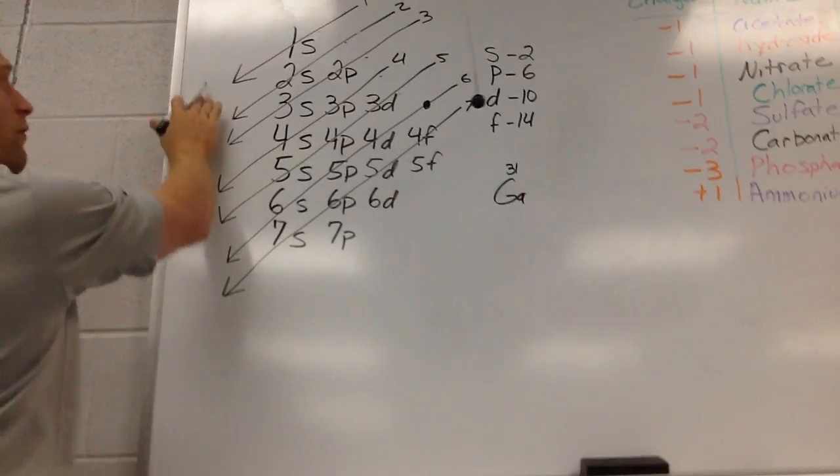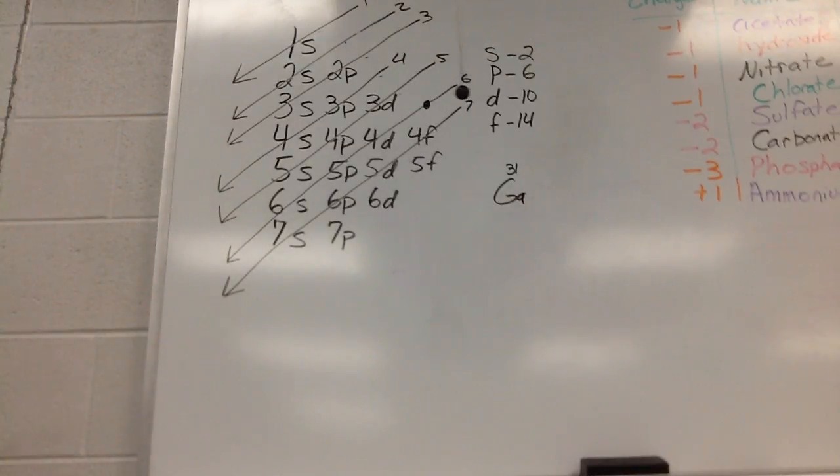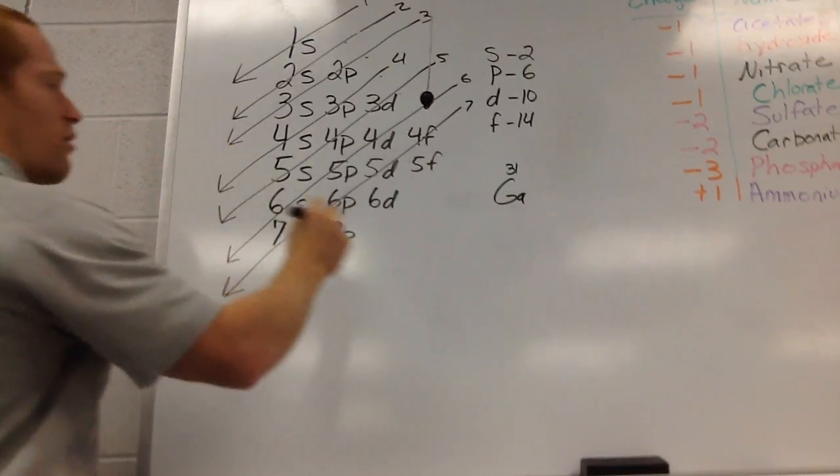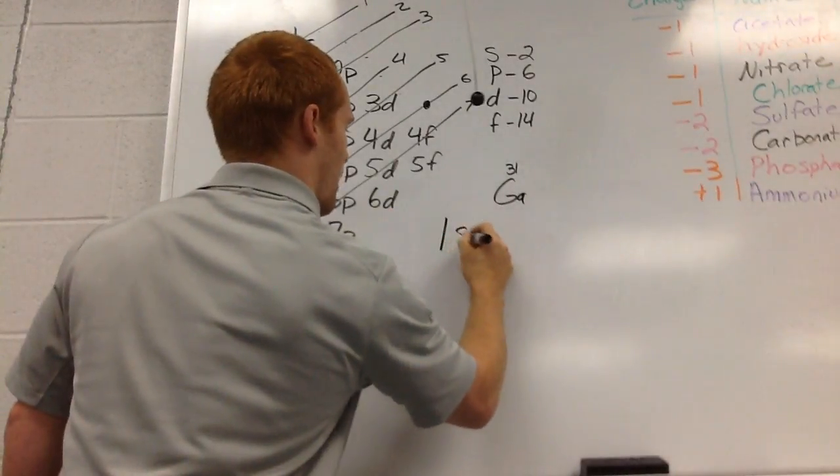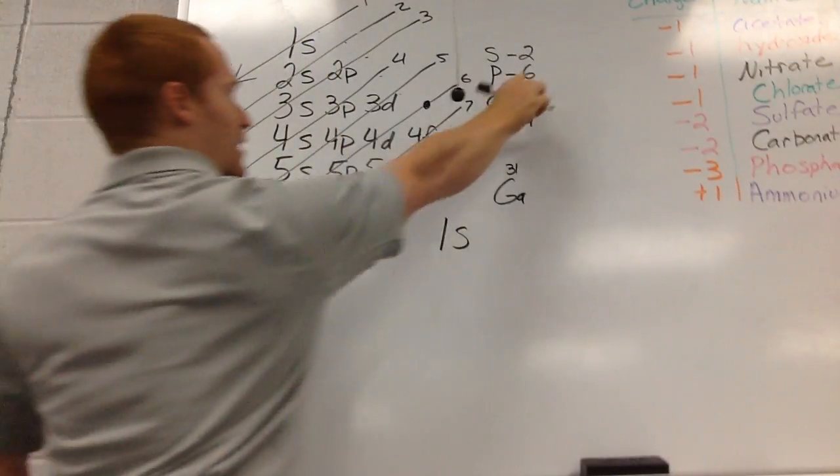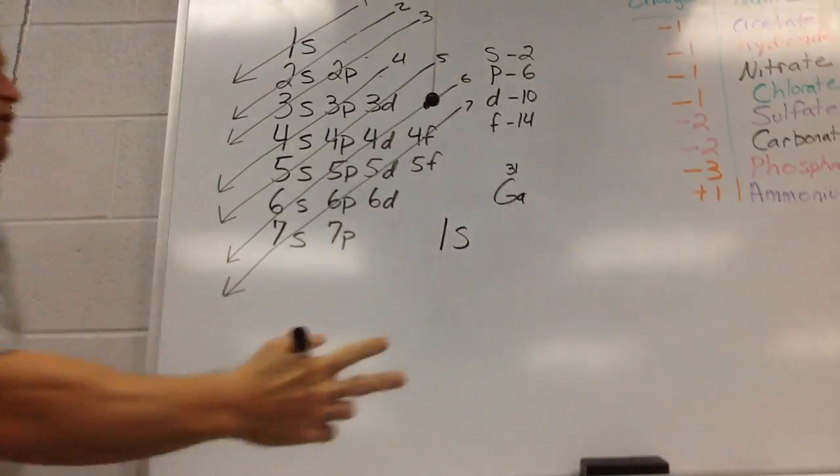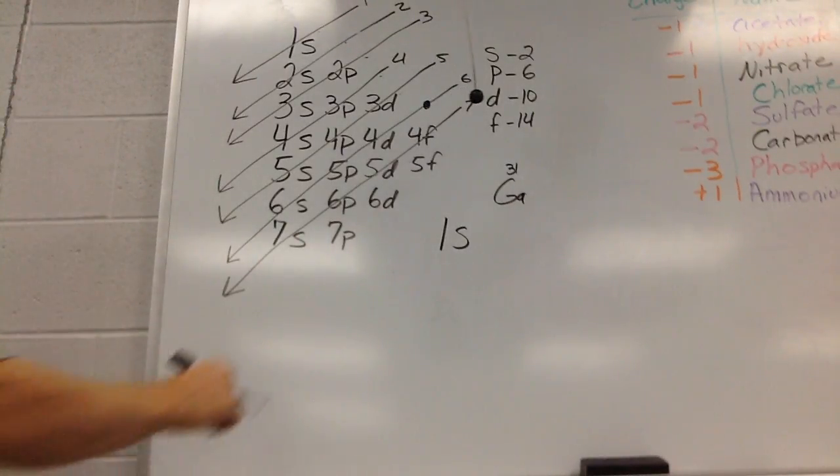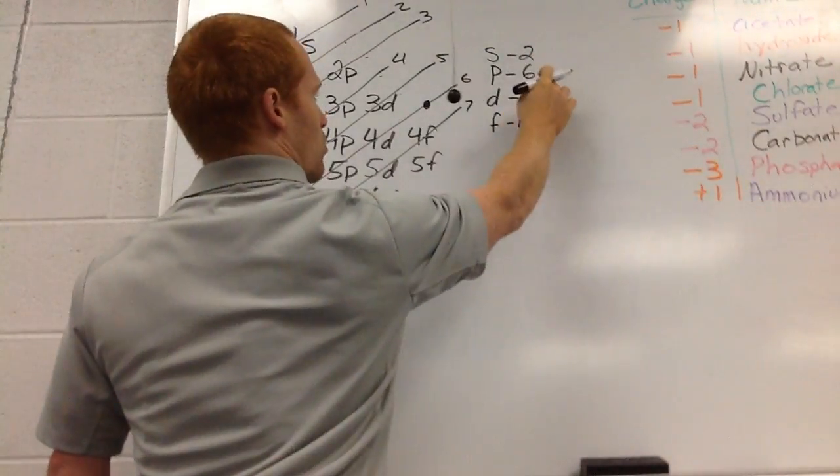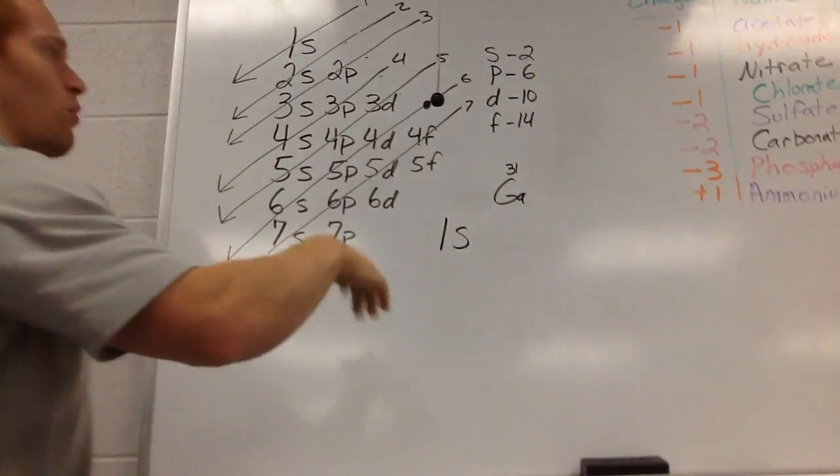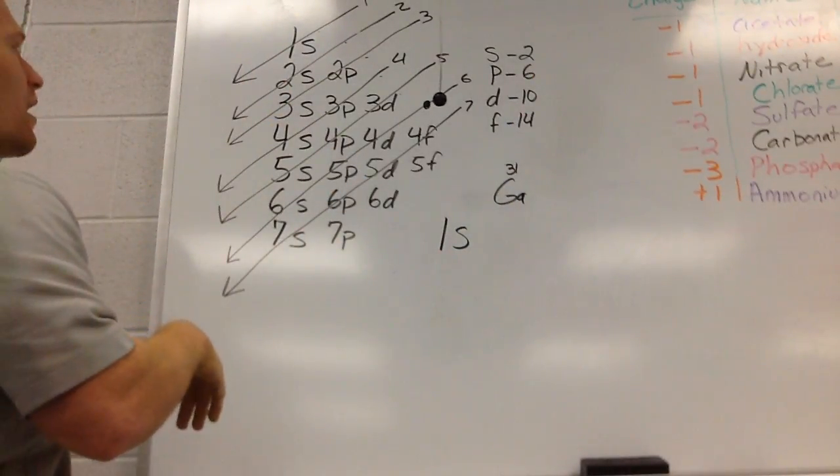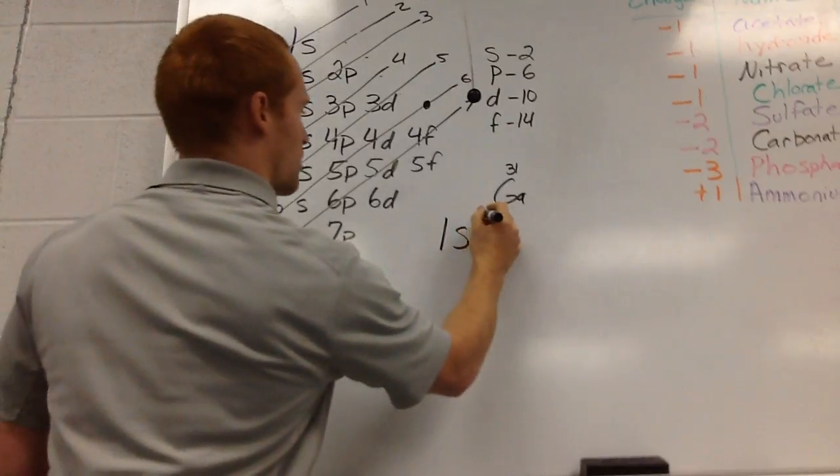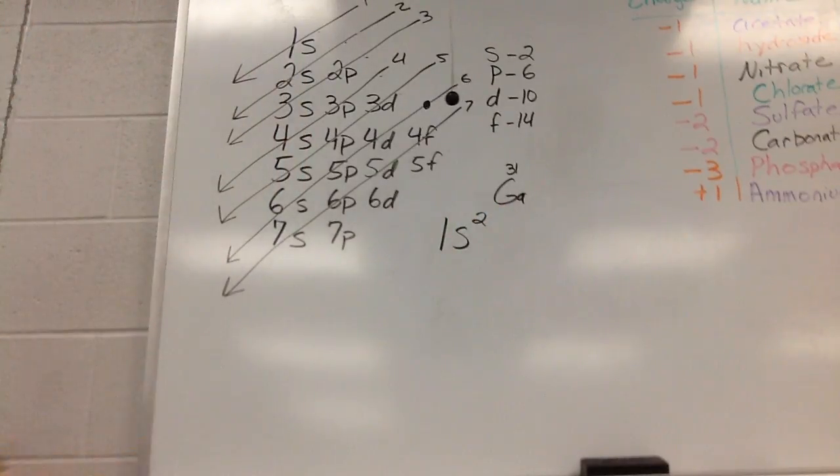You have to go completely through arrow 1 before you can move on to arrow 2. So we're going to start with arrow 1. We have 1s. And notice our exponents up here. We can have two exponents. A maximum of 2 for the s orbital. You can have 6 for p orbital, 10 for d, 14 for f.